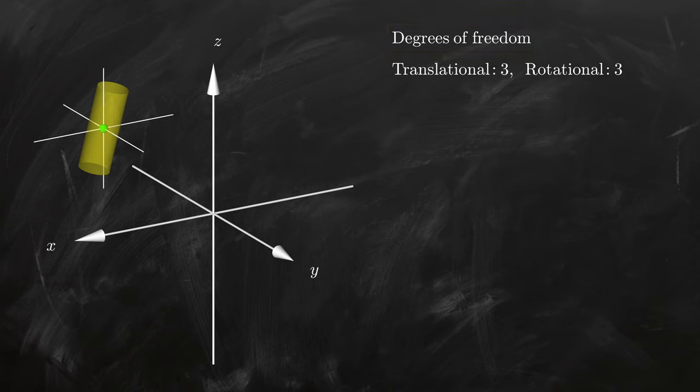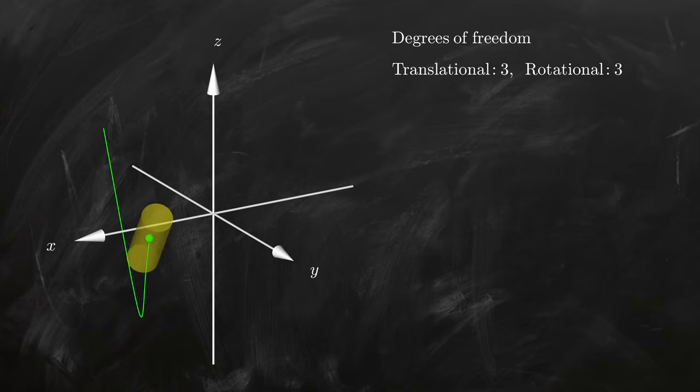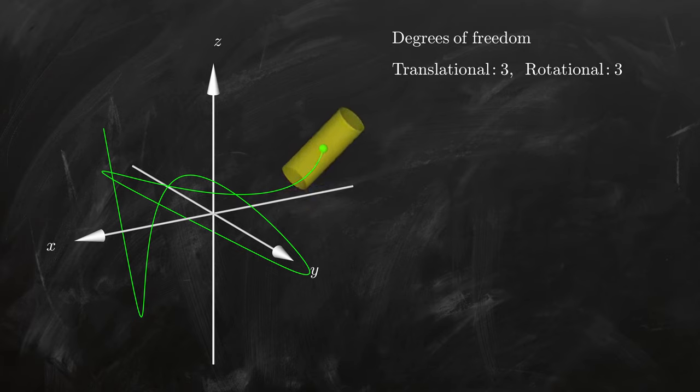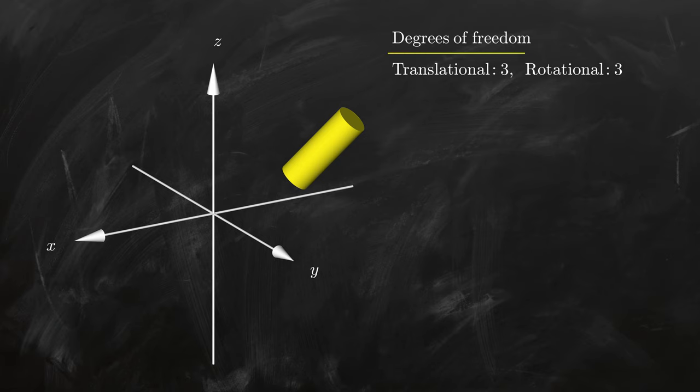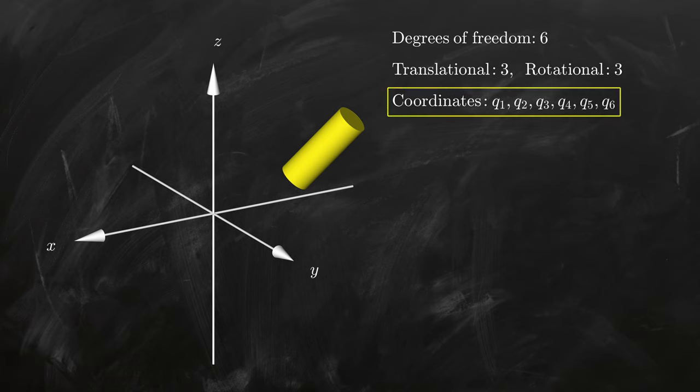Putting this together, we can describe any motion of the cylinder in terms of translation of its center of mass, along with rotation of the rest of the cylinder about the center of mass, and these two types of movement can happen simultaneously and independently. This implies that our cylinder has six degrees of freedom in total, meaning that we need six independent coordinates to uniquely describe its position and orientation at a given time.